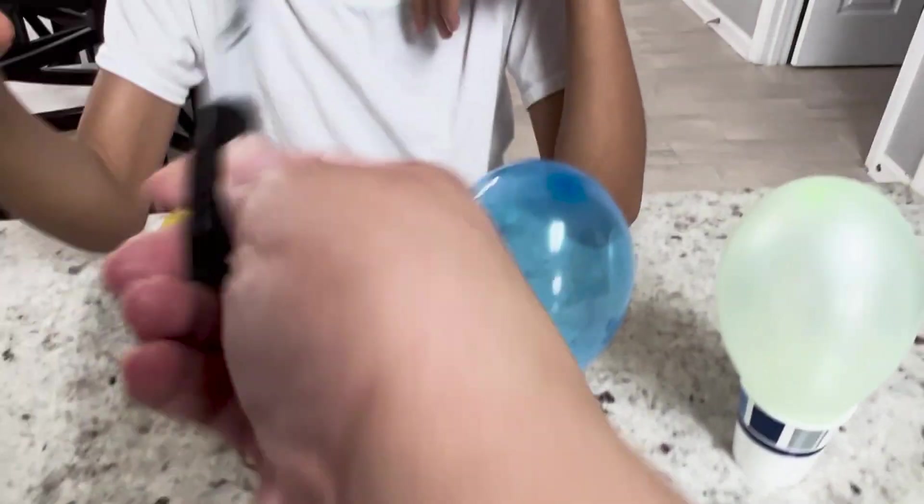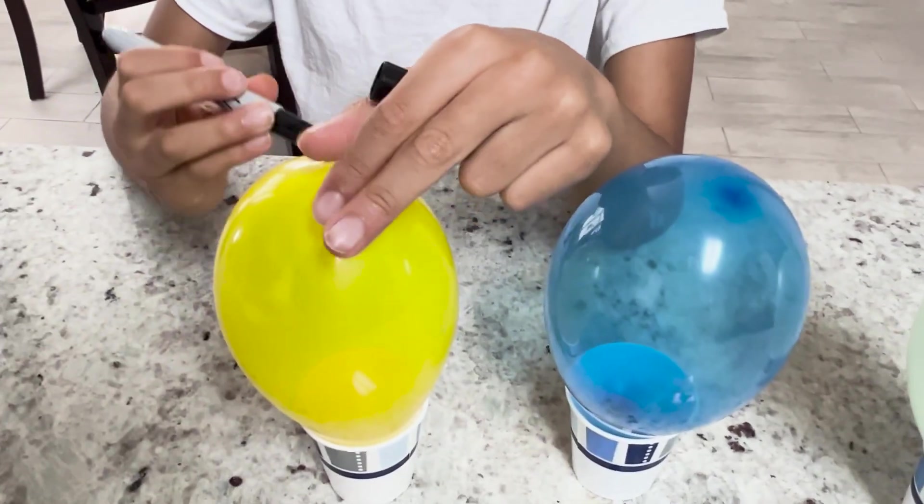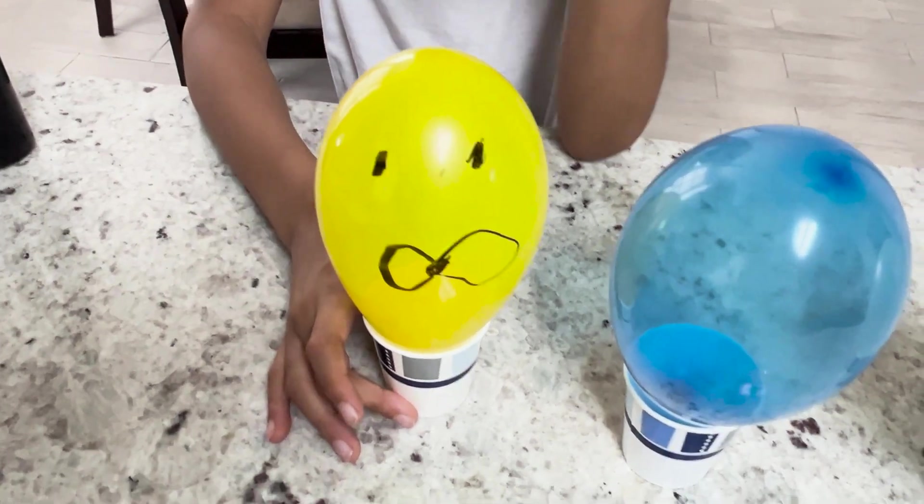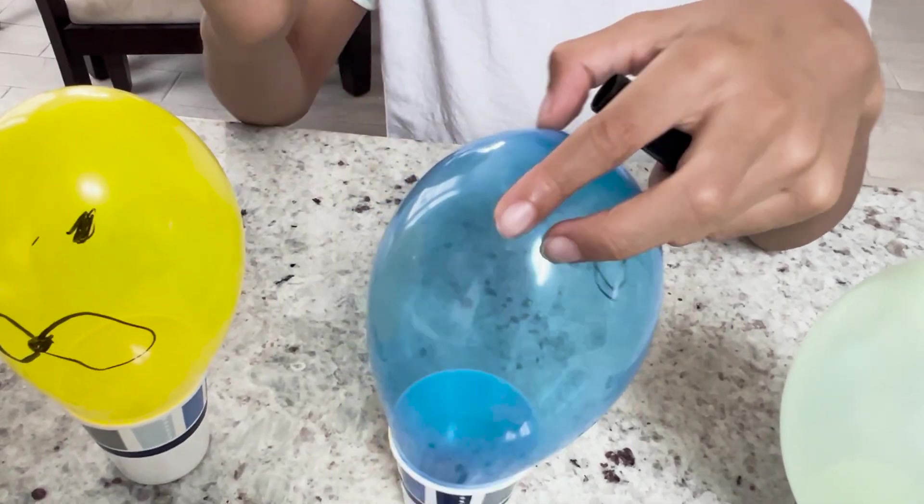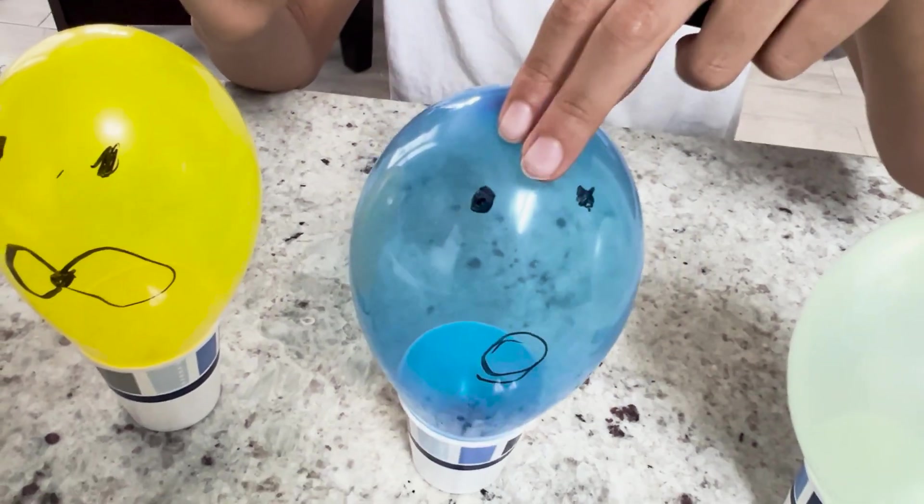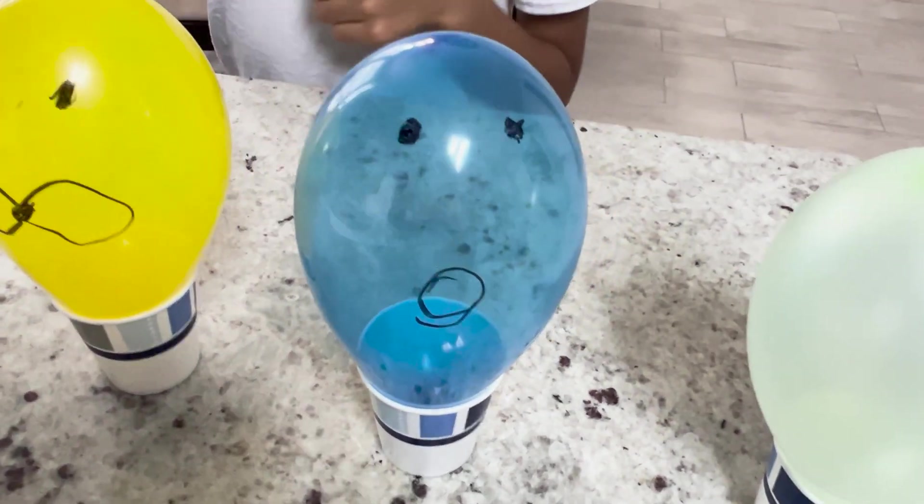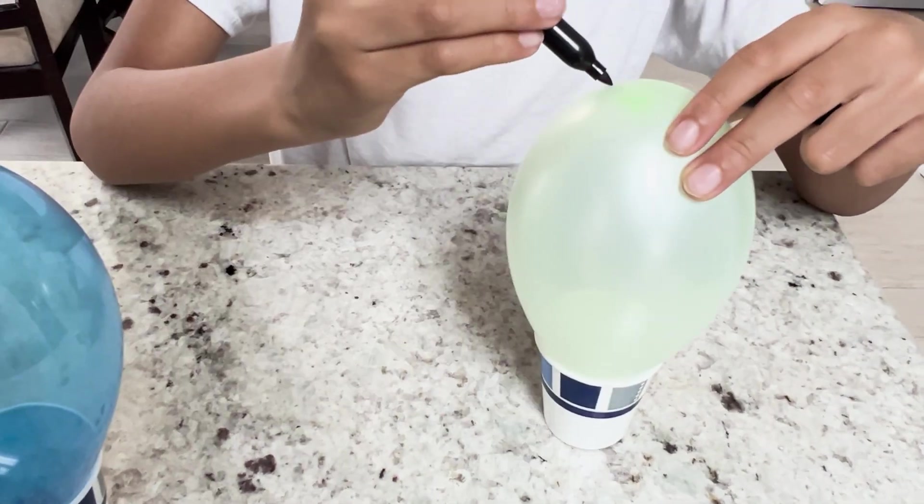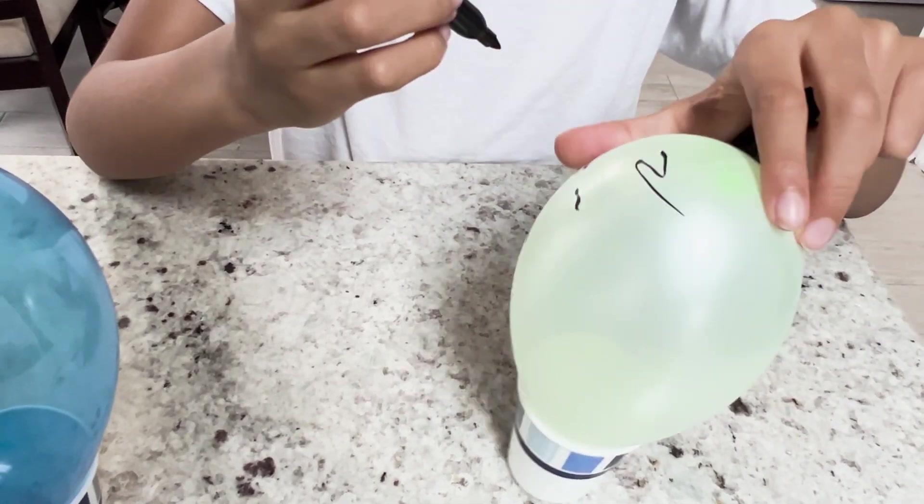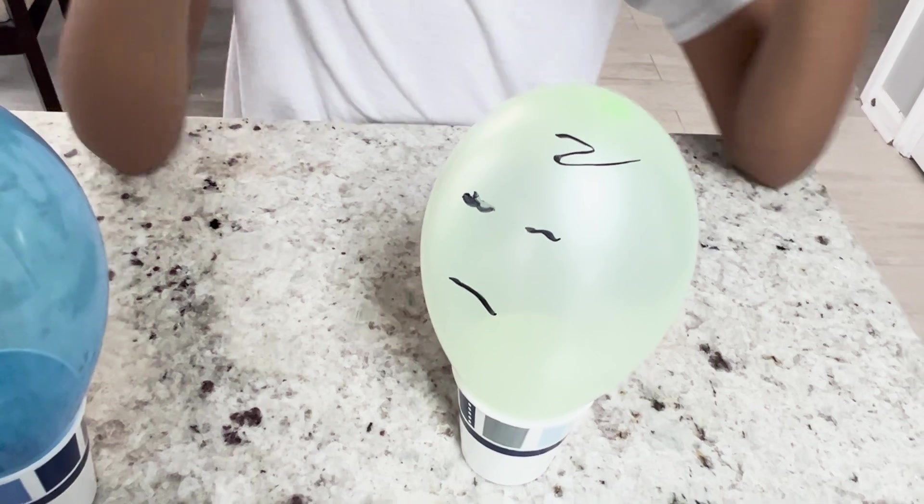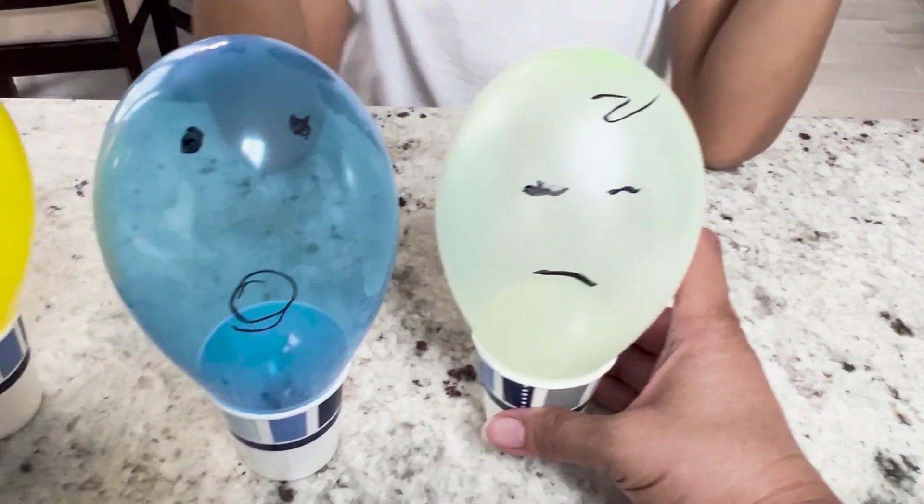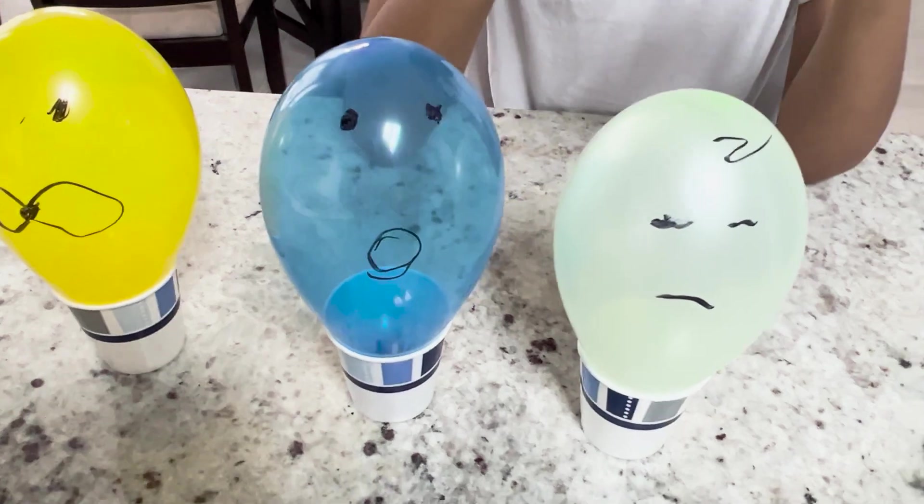Alright, Munch, how about we customize them with some funny things? Let's do... Awesome. Okay. It's like... And then this one is like, he's sleepy. He's sleepy. He's a sleepy balloon. Alright, well he won't be so sleepy when he goes pop.